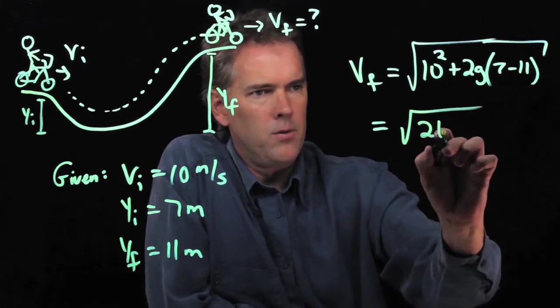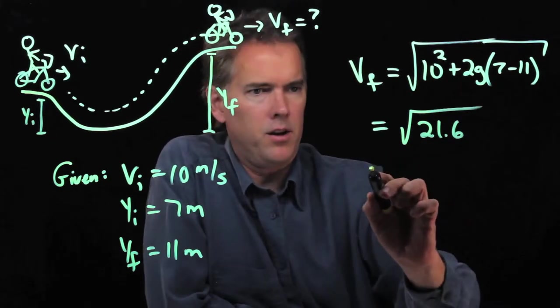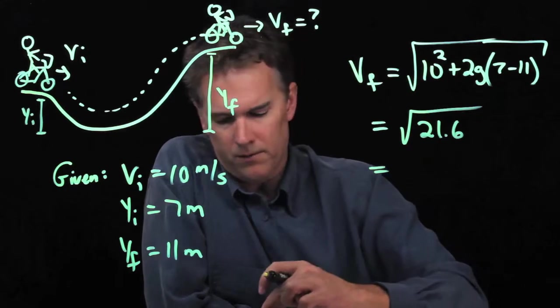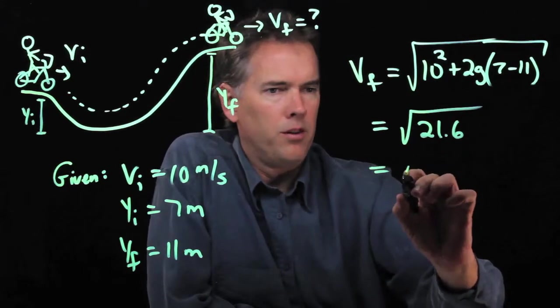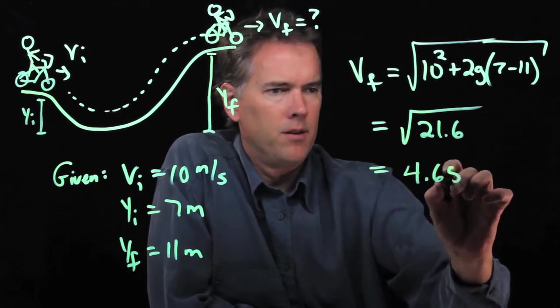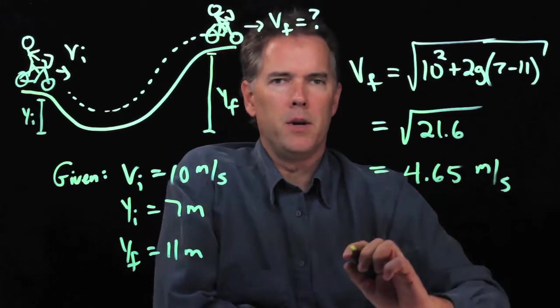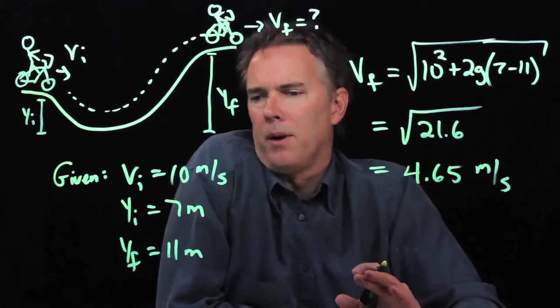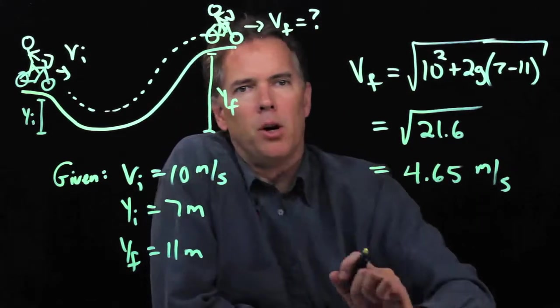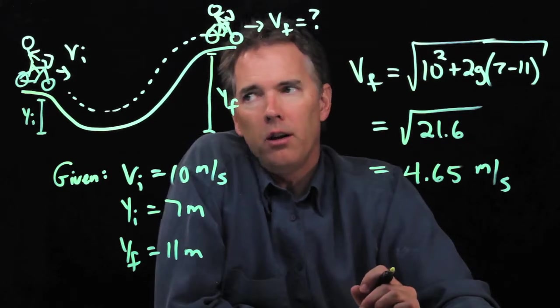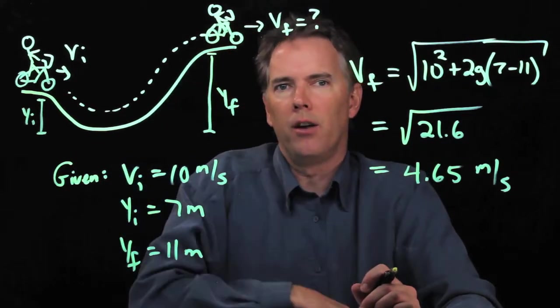I get the square root of 21.6, which is 4.65, and the units are meters per second. So that makes sense. You ended up going slower than you started initially, but that's because you went up this hill. You ended up at a higher altitude than you started at.